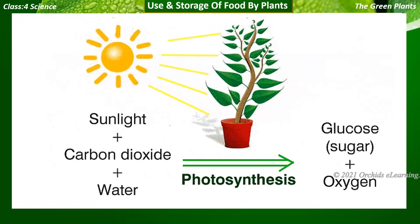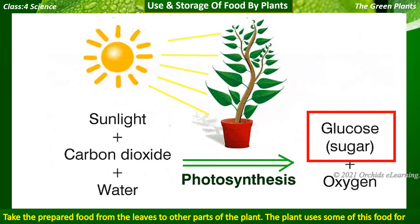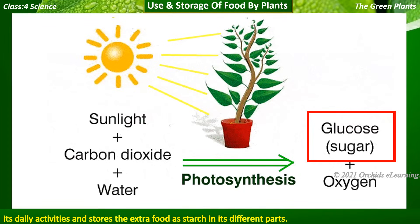Use and storage of food by plants: the food prepared by the process of photosynthesis is called glucose. The stem and branches of the plant take the prepared food from the leaves to other parts of the plant. The plant uses some of this food for its daily activities and stores the extra food as starch in its different parts.